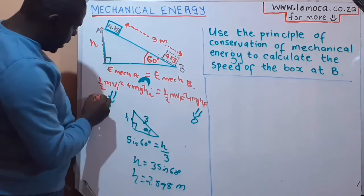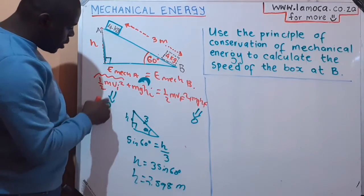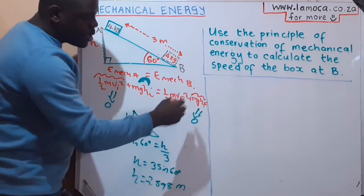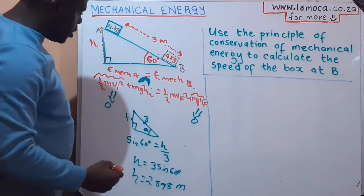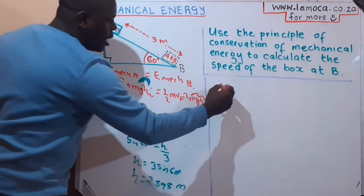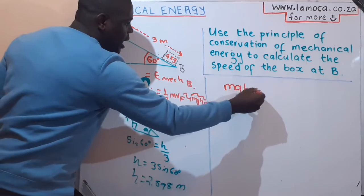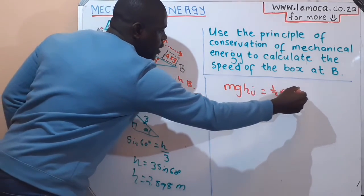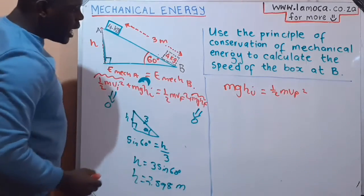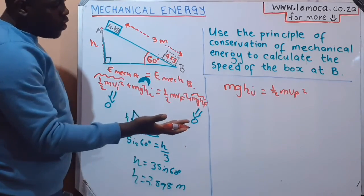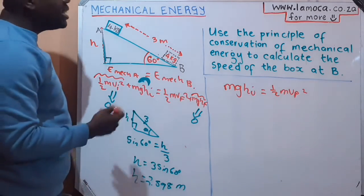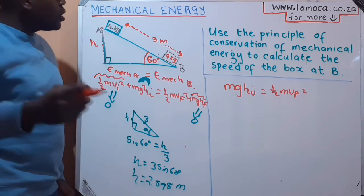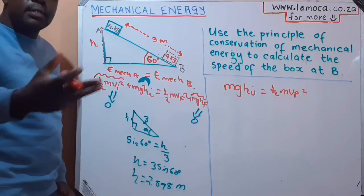Simplifying that, remember this term is going to die off because our initial velocity is zero. This term is also going to die off because our final height is also zero. So we are left with mgh_i = ½mv_f². The mass dies off because we are talking about the same object. We didn't really need to know the mass of the object, which is very crucial because this is a case similar to freefall.